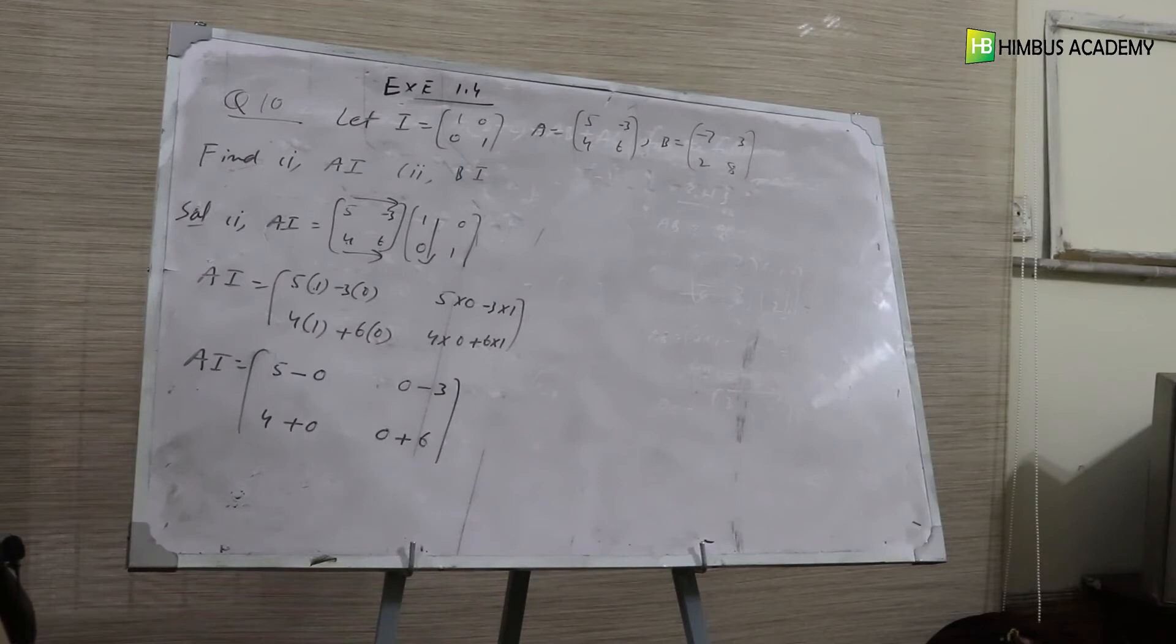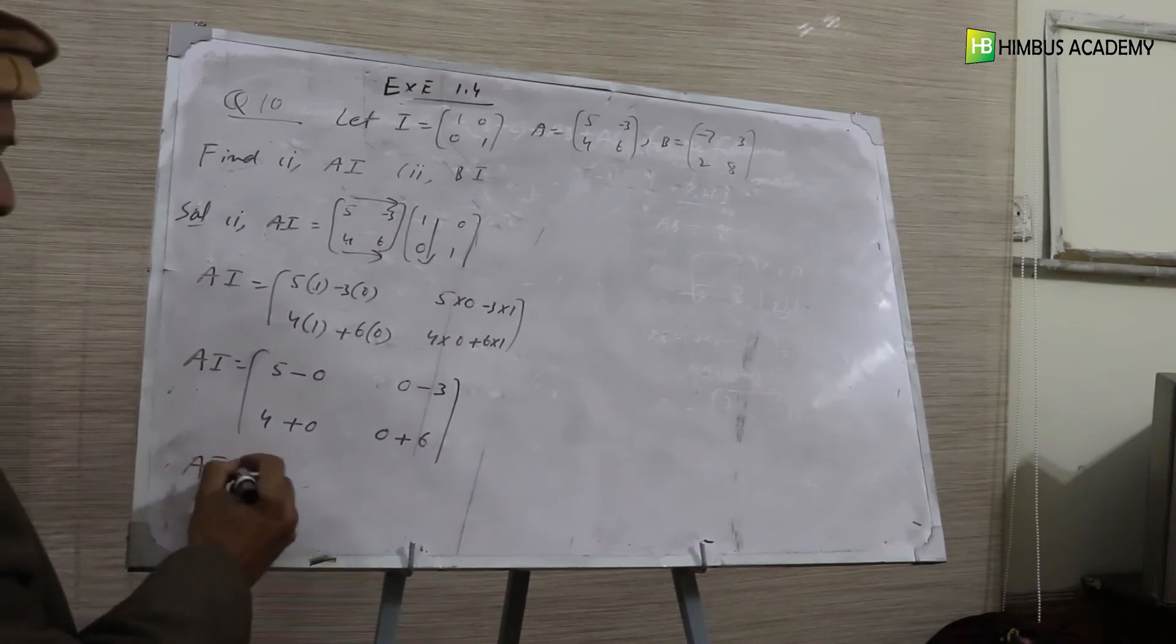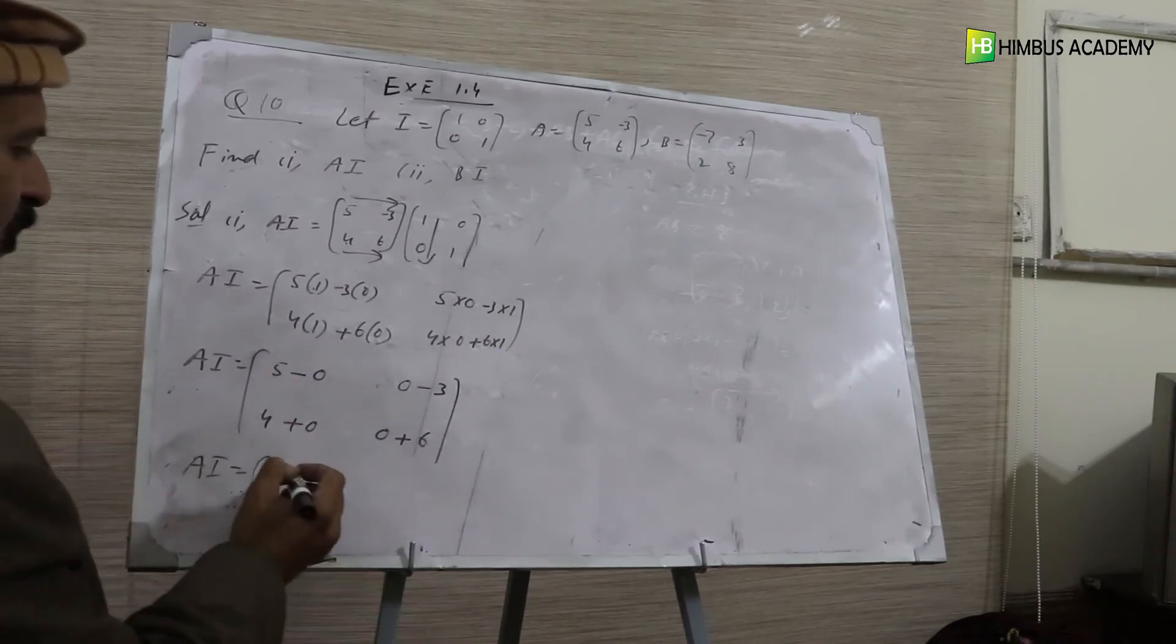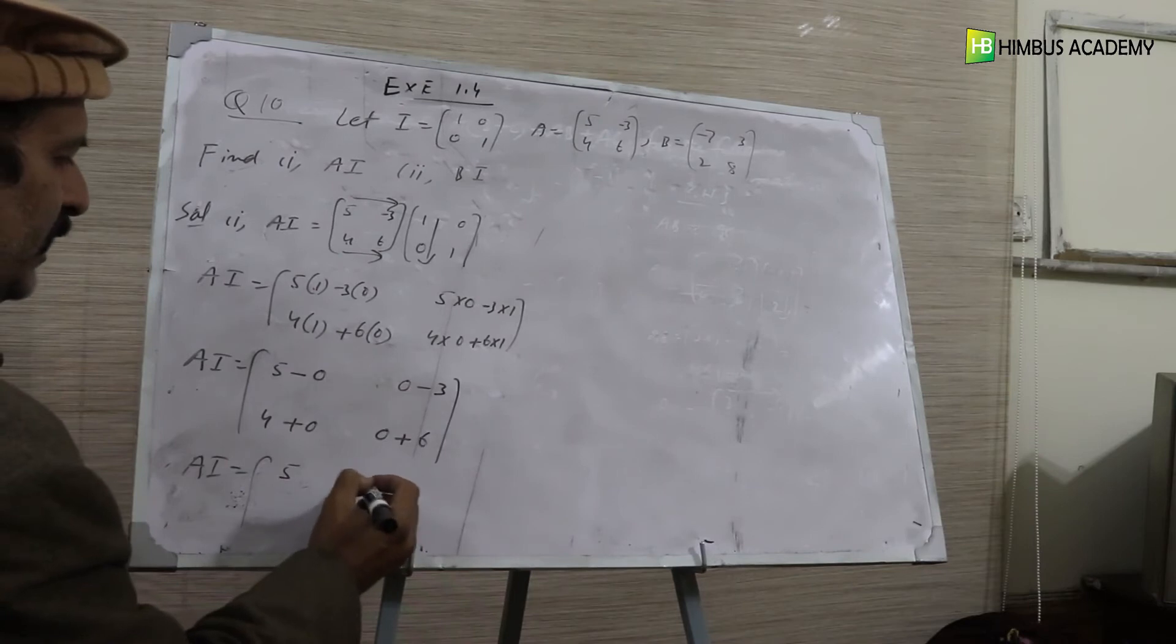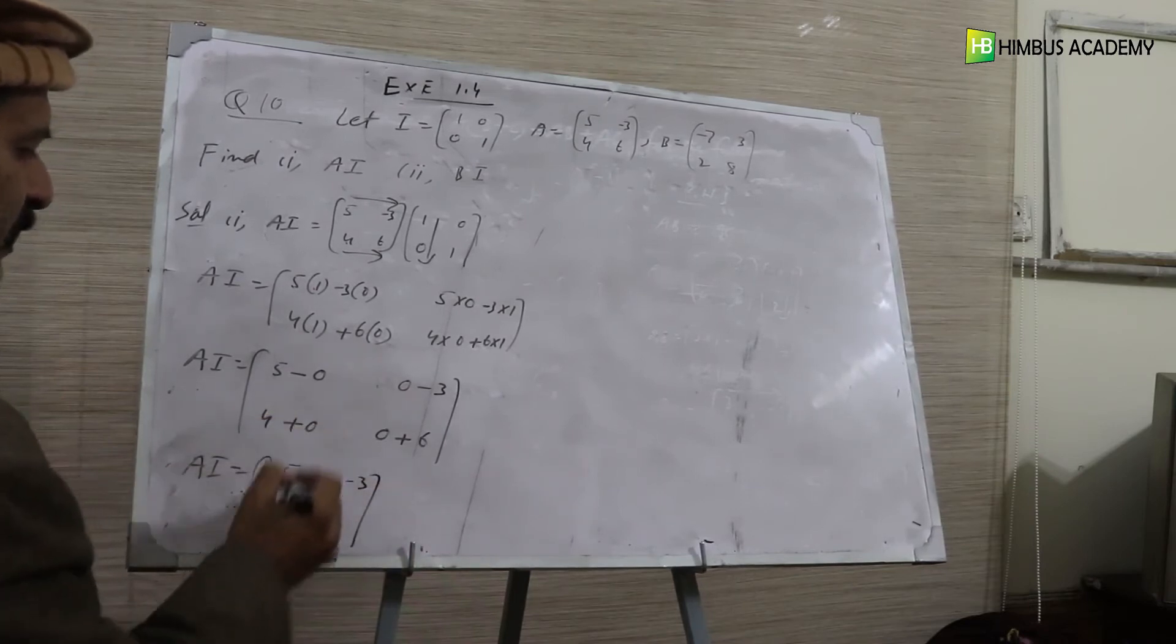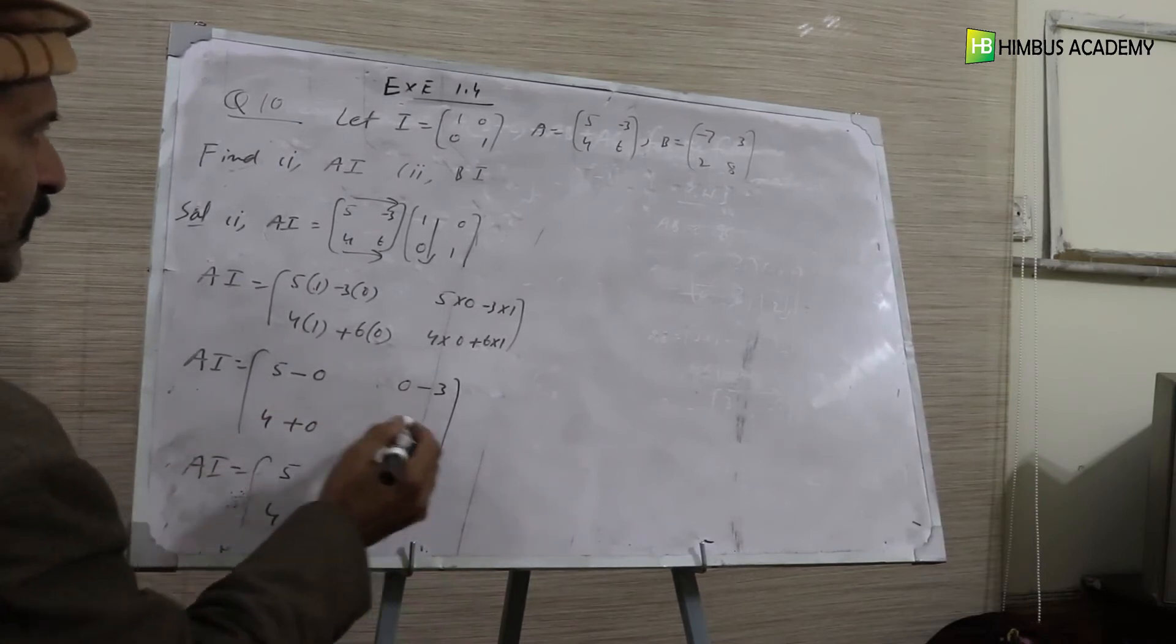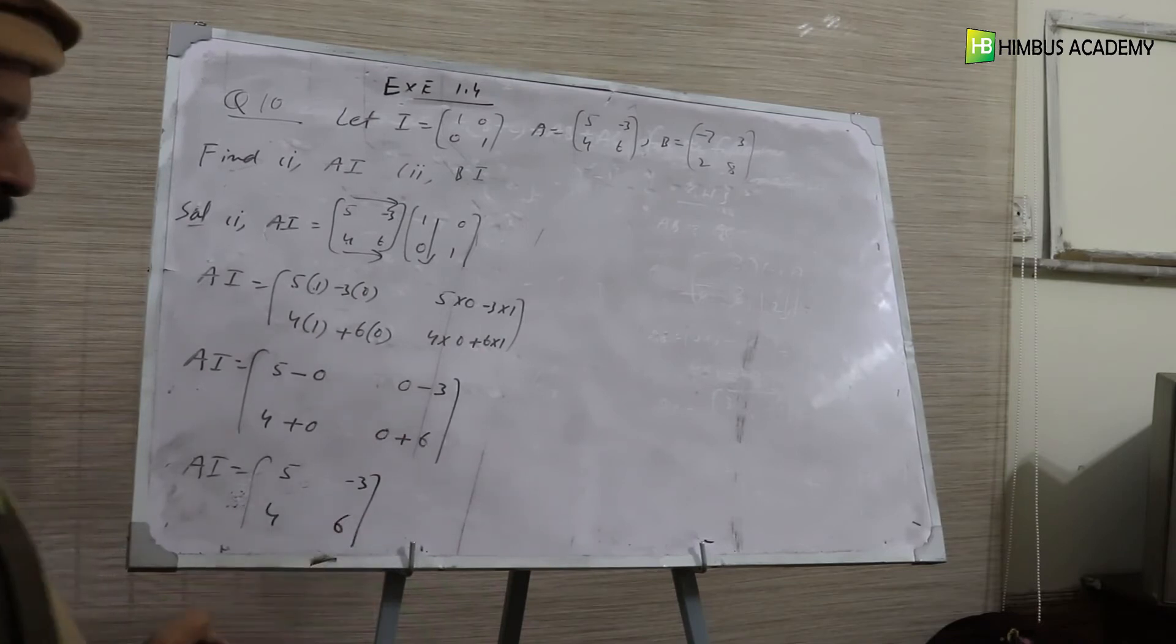The zero step can be ignored, but we explain it for clarity. A, I equals 5 minus 0 is 5, 0 minus 3 is minus 3, 4 plus 0 is 4, 0 plus 6 is 6.